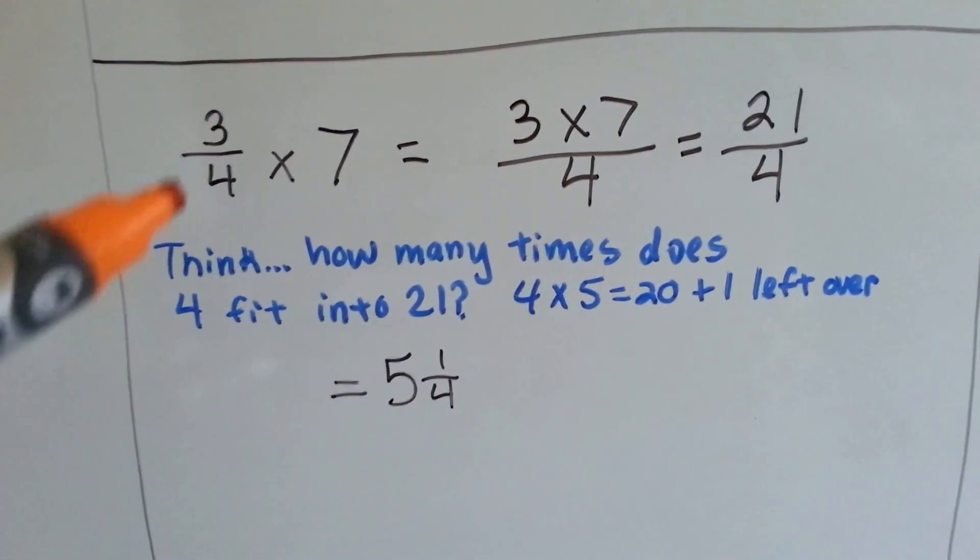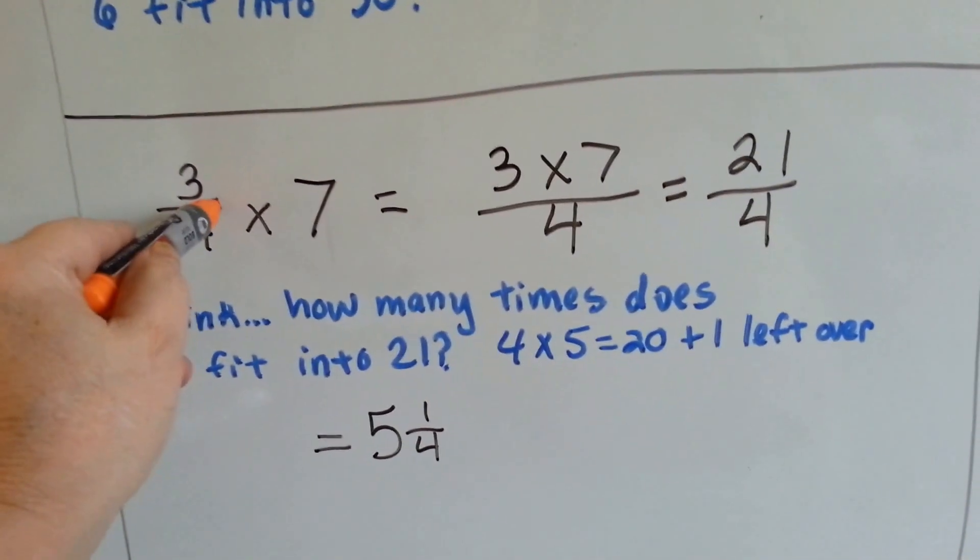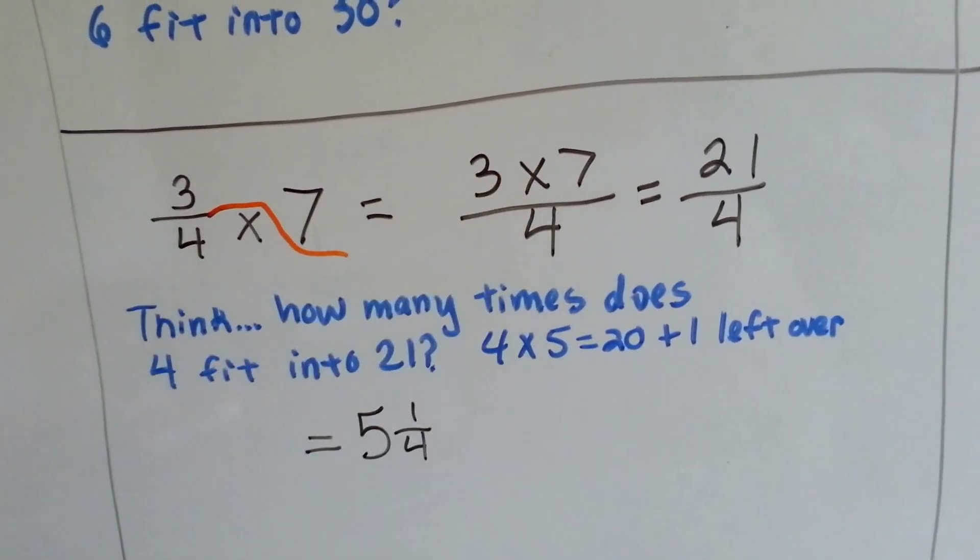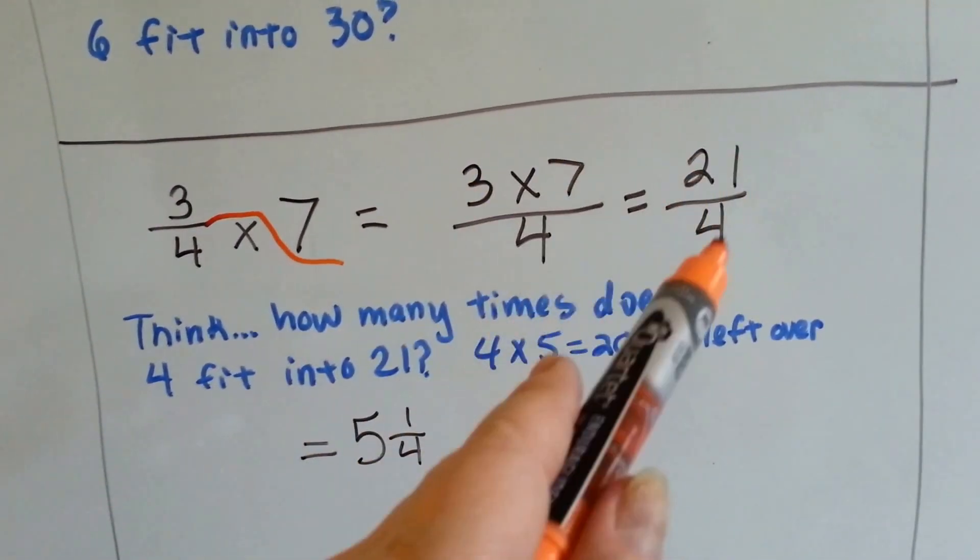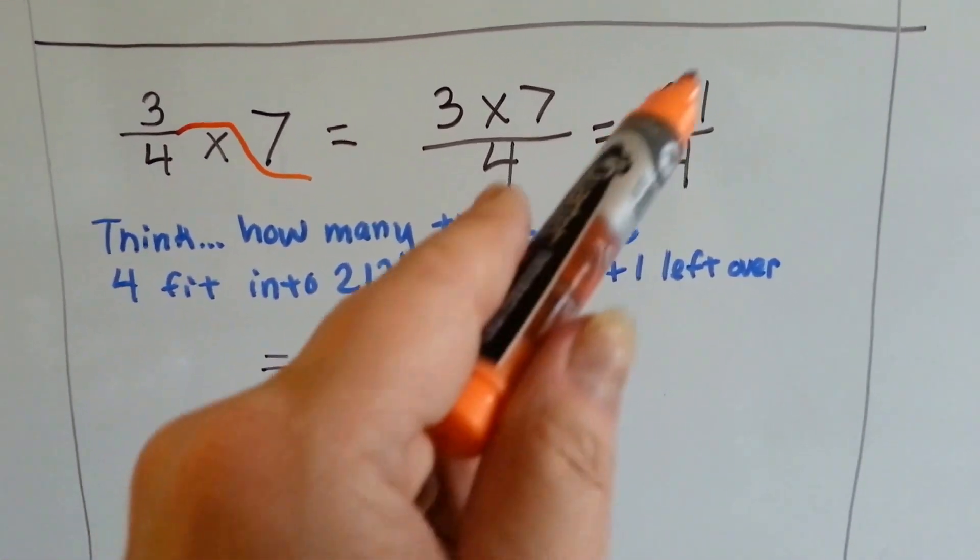3 fourths times 7 becomes 3 times 7 over 4. See how we just pretty much are just putting it over it? See? That's 21 over 4. So how many times does 4 fit into 21?